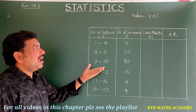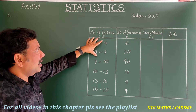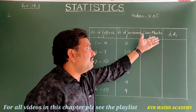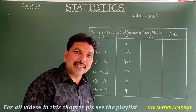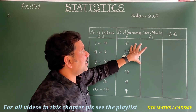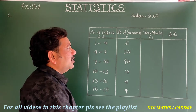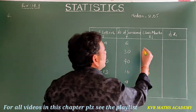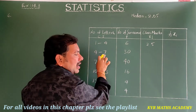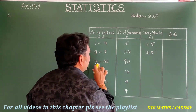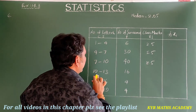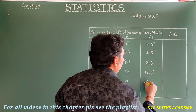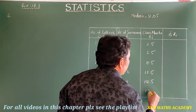Now from the table I'll find the mean using the direct method. The class marks (xi) are the averages of each class interval: (1+4)/2 = 2.5, (4+7)/2 = 5.5, (7+10)/2 = 8.5, (10+13)/2 = 11.5, (13+16)/2 = 14.5, (16+19)/2 = 17.5.